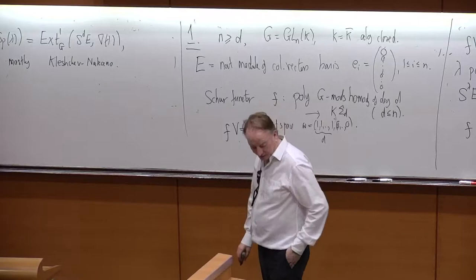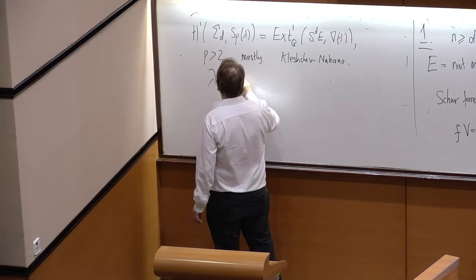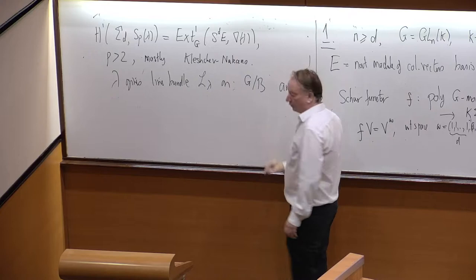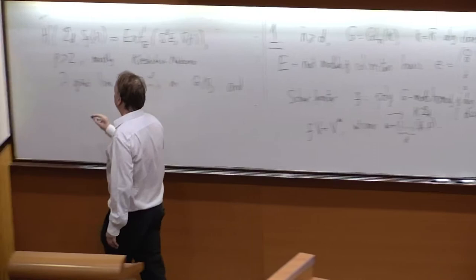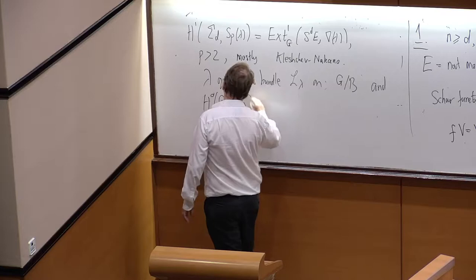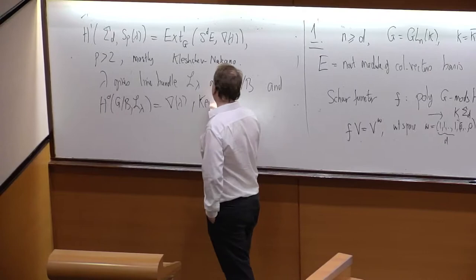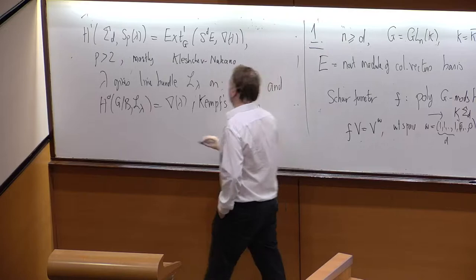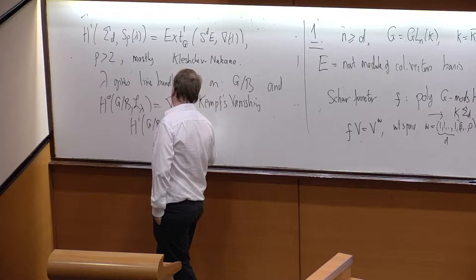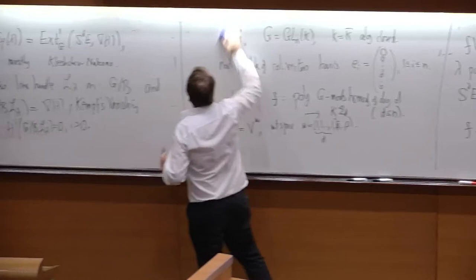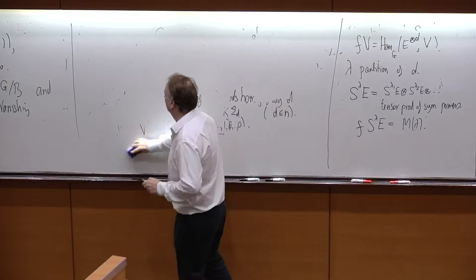The other thing is that, on the other hand, λ gives a line bundle L_λ on the projective variety G mod B. And the global sections, in fact, this is just a matter of definition, it's just H^λ. But the interesting bit is that one has Kempf's vanishing theorem.